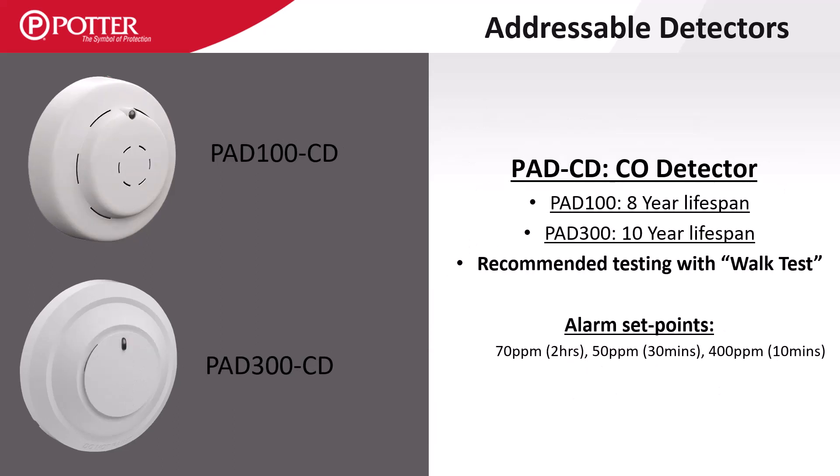On the PAD CD carbon monoxide detectors, there is a difference in lifespan between the 100 and 300 series detectors. The PAD 100 has an 8 year lifespan, while the 300 has a 10 year lifespan. Because CO detection requires threshold timers, it is recommended to test POTR's CO detectors with the control panel in walk test mode. This disables the timers and allows a quick response to CO test gas.